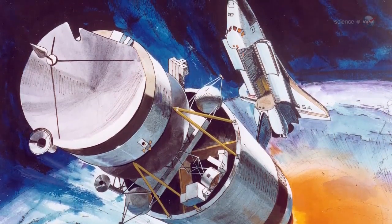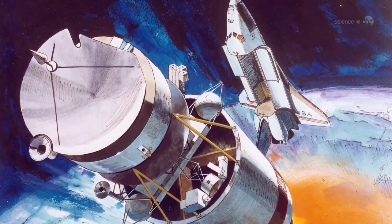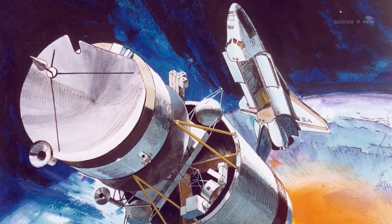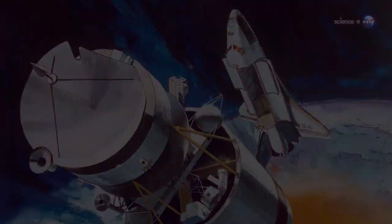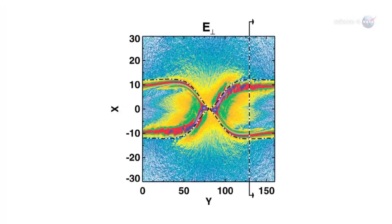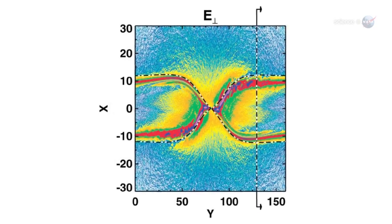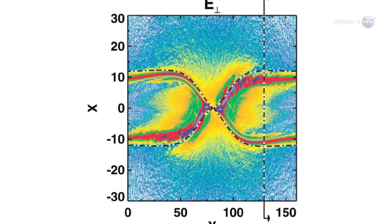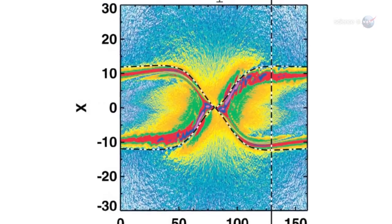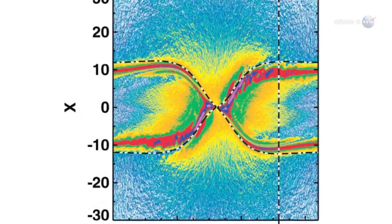Because Polar carried sensors similar to those of MMS, Scudder decided to see how an X-point looked to Polar. Using Polar data, we have found five simple combinations of magnetic field and energetic particle measurements that tell us when we've come across an X-point or an electron diffusion region.